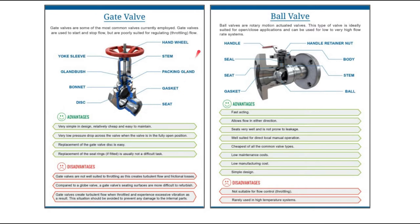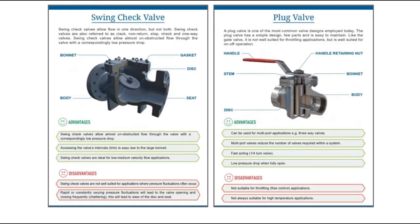Ball valves are rotary motion actuated valves. This type of valve is ideally suited for opening and closing applications and can be used for low to very high flow rate systems. Ball valves are fast acting, allow flow in either direction, sit very well and are not prone to leakage, and are well suited for direct local manual operation. Importantly, ball valves are the cheapest of all common valve types, with low manufacturing and maintenance cost, but they are not suitable for throttling — only for on-off operations — and are rarely used in high temperature systems.